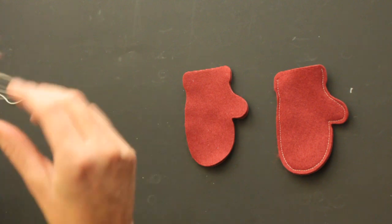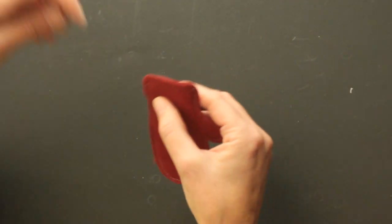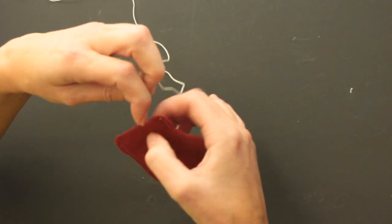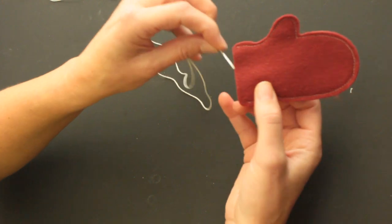The cool thing, if you sew your mittens together, is that you already have a spacing where you have to line up the stitches, so that way they will be even.